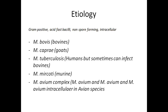Similarly, there are some other less common species you should quickly review: Mycobacterium microti, and the Mycobacterium avium complex, which is further composed of two important species — Mycobacterium avium and Mycobacterium avium intracellulare — which causes TB in some avian species.